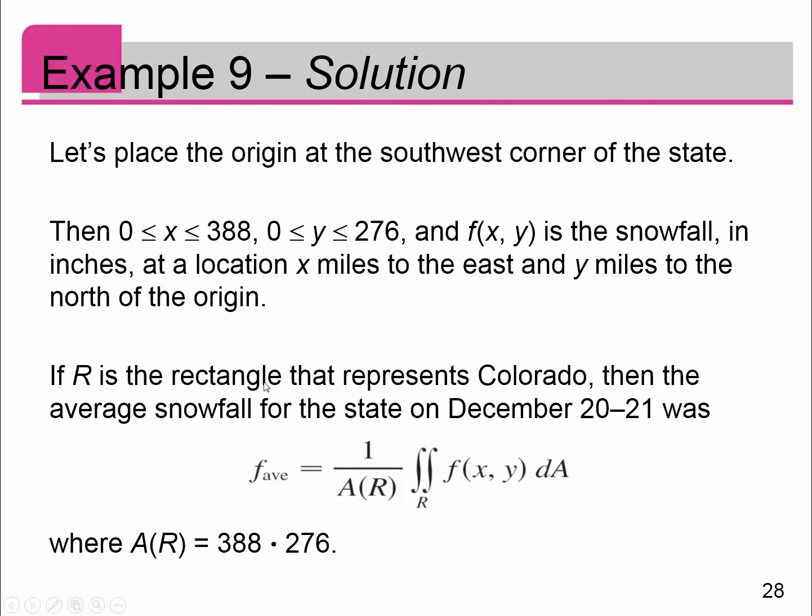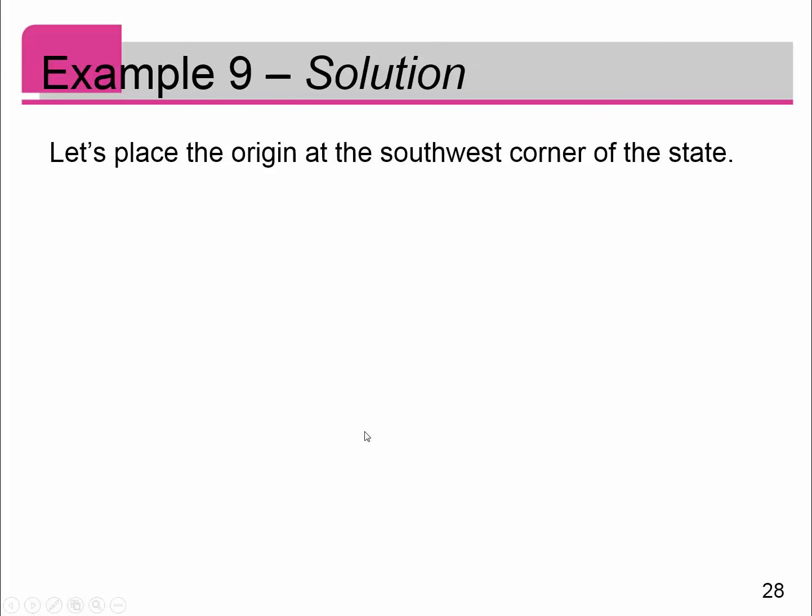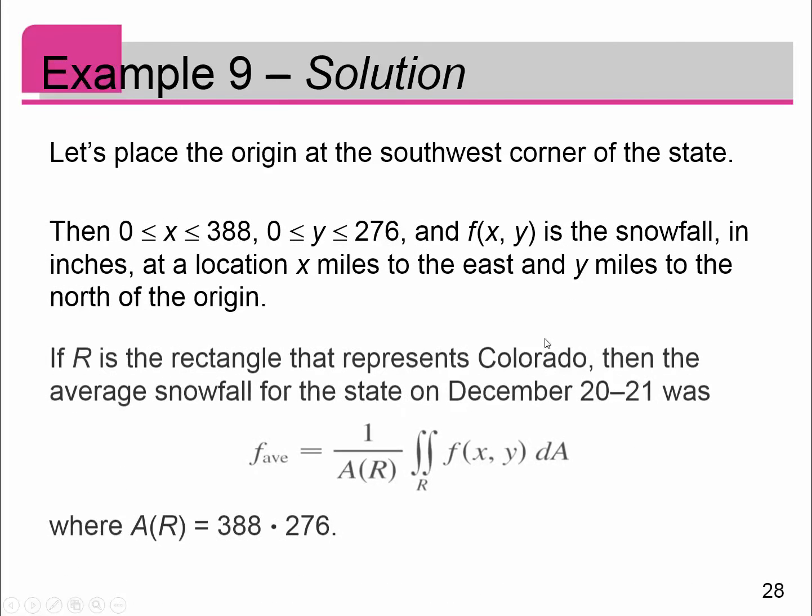We let R be the rectangle that represents Colorado. The average snowfall for the state, based on the formula I gave you on the previous page, is f_ave equals 1 over the area of the rectangle, which is the area of Colorado, times the double integral R of f(x,y) dA. I know that A(R) is going to be 388 by 276, because that's the area of that rectangle.